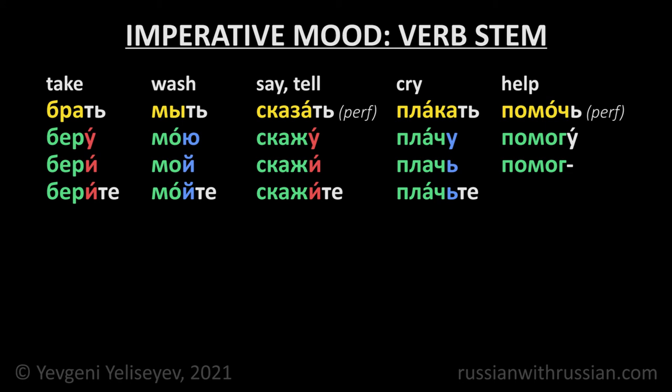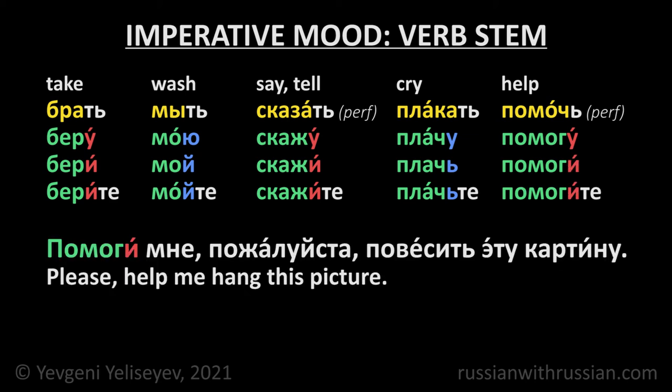Я помогу — the ending is stressed, so the informal imperative form ends in the stressed И: Помоги, Помогите. Помоги мне, пожалуйста, повесить эту картину — Please help me hang this picture.